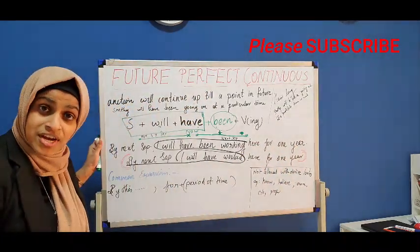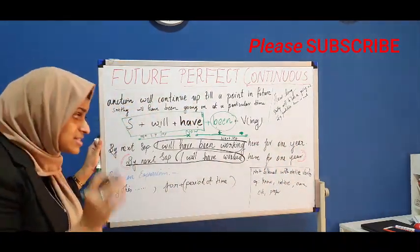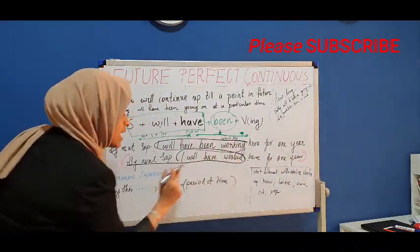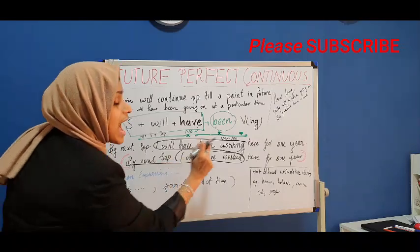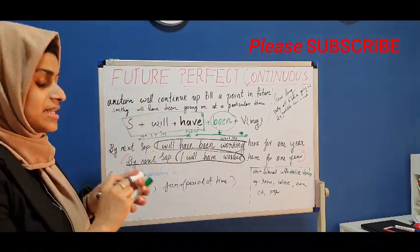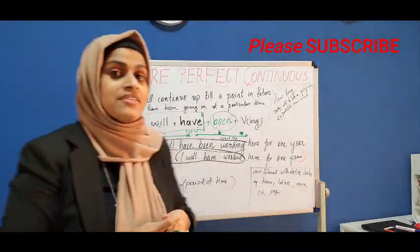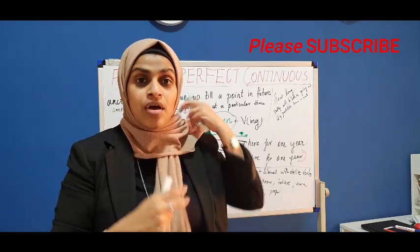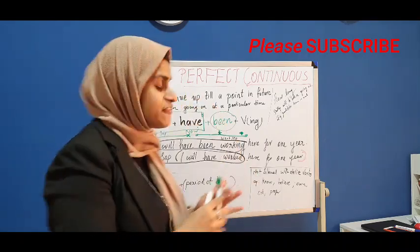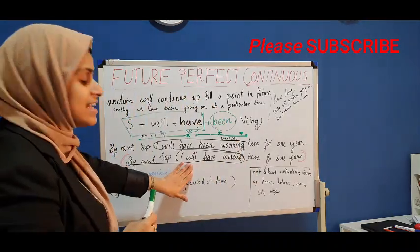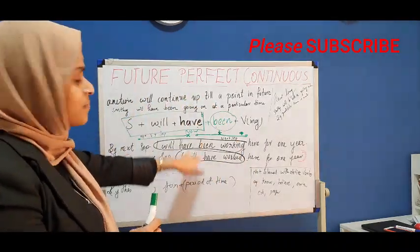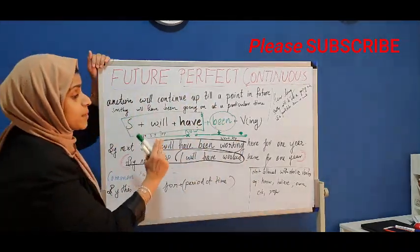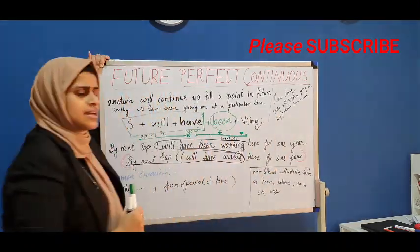So what is the difference? There is a difference: 'I will have been working' versus 'I will have worked,' which we saw in the last episode. 'I will have been working here for one year' — what is the difference here? This sentence is future perfect continuous tense.